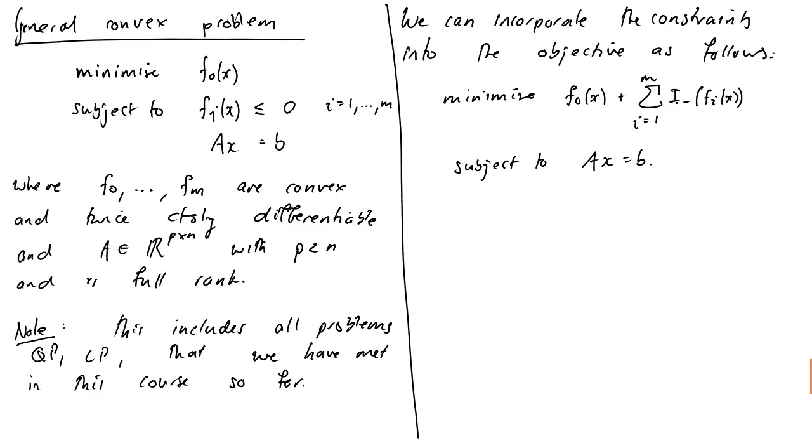Okay, so if f1 of x equals 1, for example, this will be infinity. Okay, so it'll make our objective positive infinity. So in order to get a value of our objective that is finite, then all of these constraints need to be satisfied. So where i minus is the indicator function for non-positive reals.